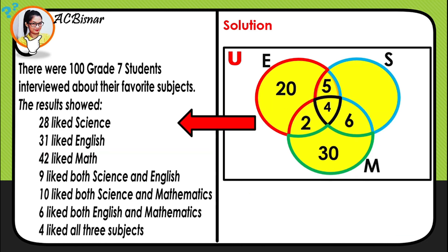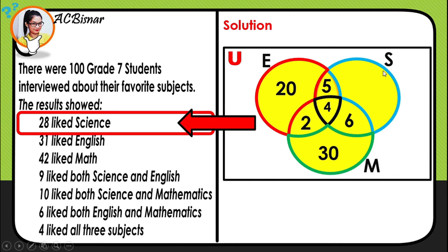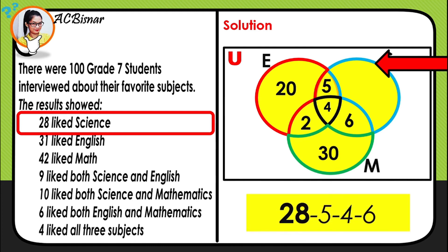28 students like science. In the science circle, we already have 5, 4, and 6. We subtract: 28 minus 5 is 23, minus 4 is 19, minus 6 gives us 13. So 13 students like science only.